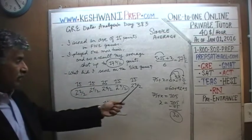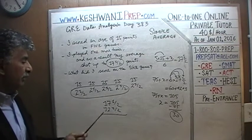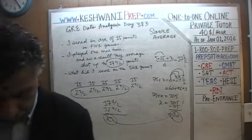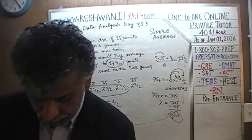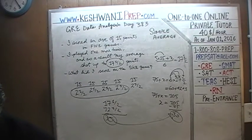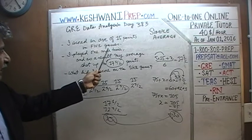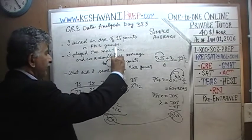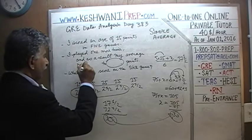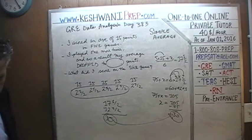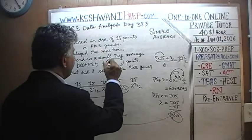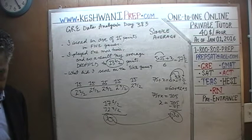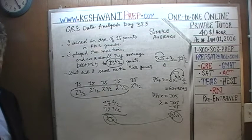He must have scored 30 points in the last game to raise his average to 17 and a half. Now let's do one more problem — and this time you're going to try it yourself first. Same setup: I scored an average of 15 points in five games. I played one more time, and as a result my average dropped to 13 and a half points. How much did I score in the sixth game?